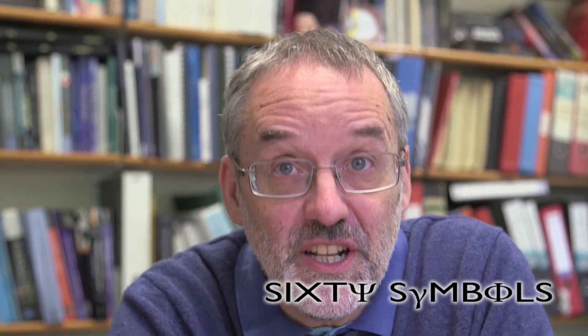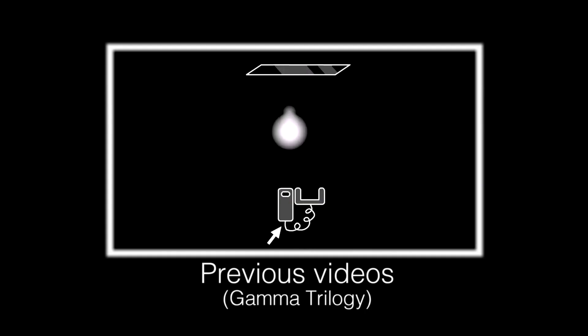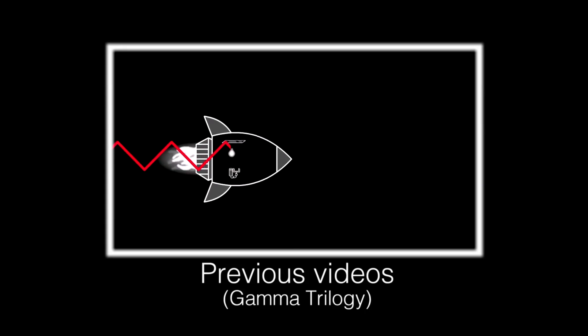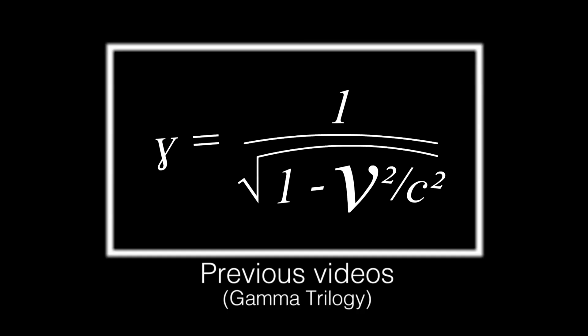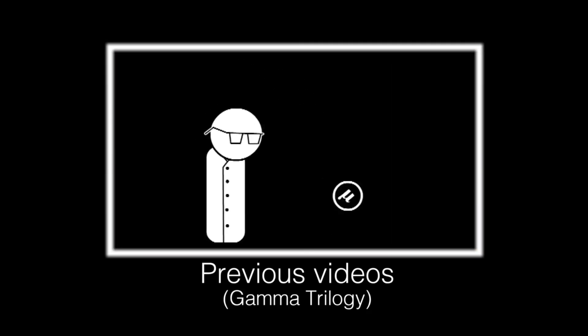We've made a few videos about relativity covering how distances change and how time changes. So I thought I'd talk about something which combines those two things together, which is how speed — distance divided by time — changes in relativity. The previous videos we called a gamma trilogy because they all had this gamma factor in them. One of the interesting things about the way speed transforms is that the gammas all disappear — they cancel out — so there is no gamma in this gamma video. We need to think about how different people measure speed in different reference frames.